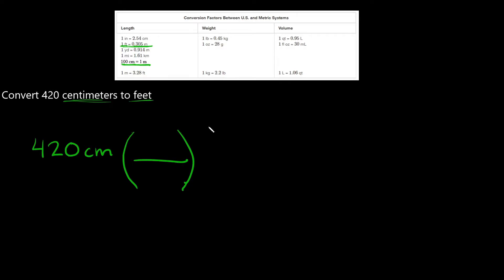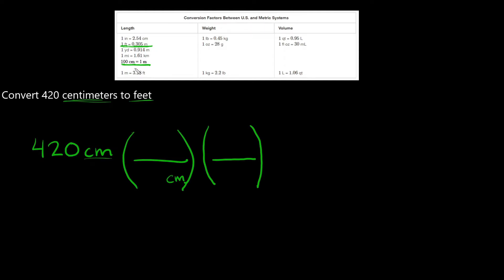That also means we're gonna have to use two fractions, because we need to put a relationship in each one. So what's gonna go in this first fraction — what units go on top and what units go on the bottom? Since we have centimeters on top right here, centimeters are gonna go on the bottom of the fraction. You never want to have the same units on the same side; you always want them on opposite sides. So since centimeters go on the bottom, I'll use the relationship that has centimeters: 100 centimeters is equal to 1 meter.